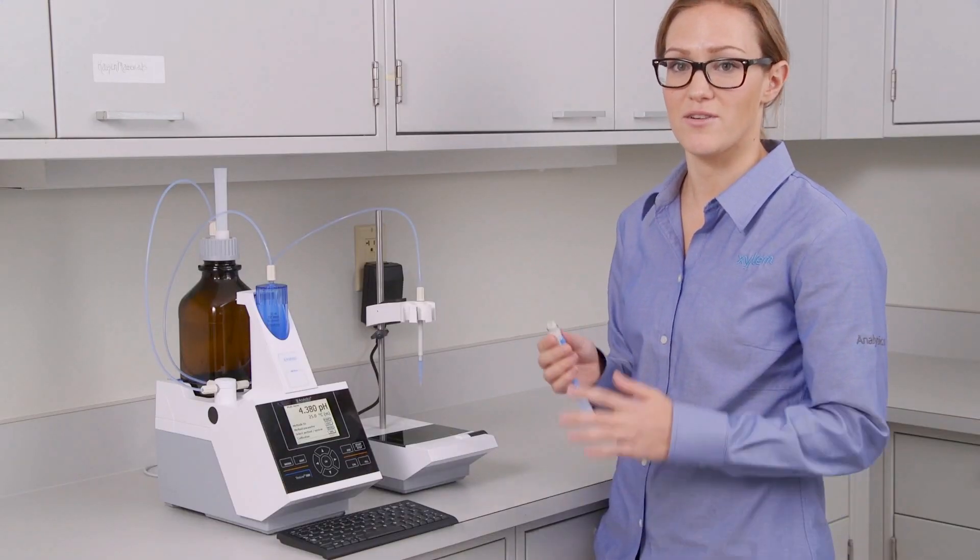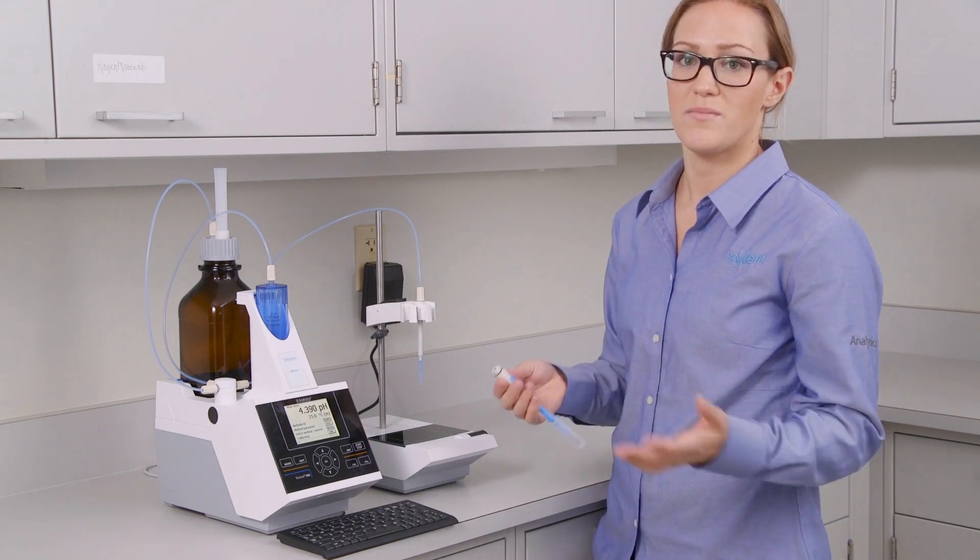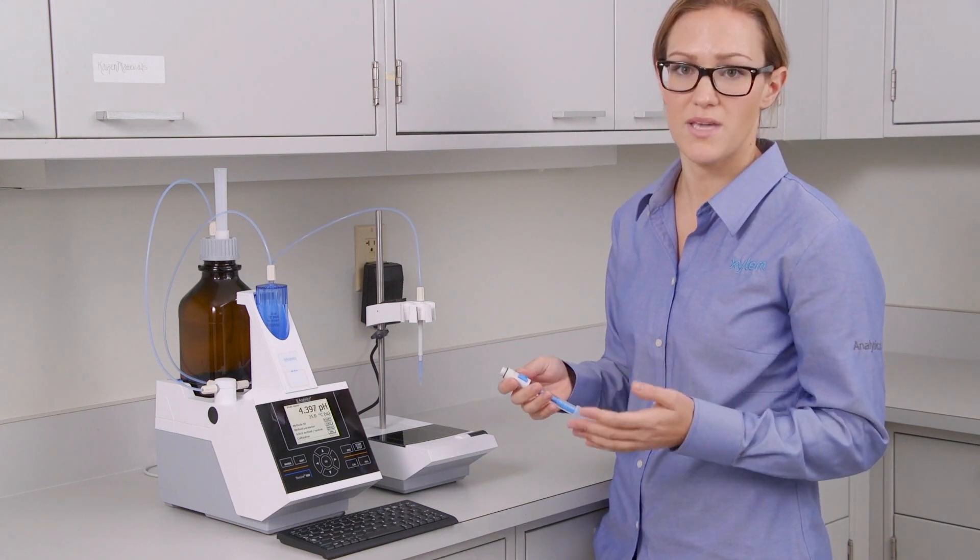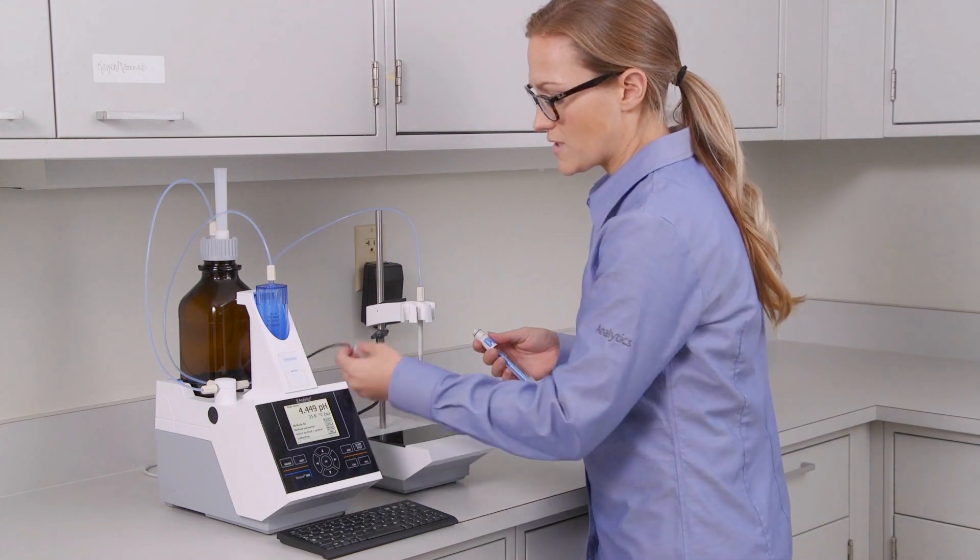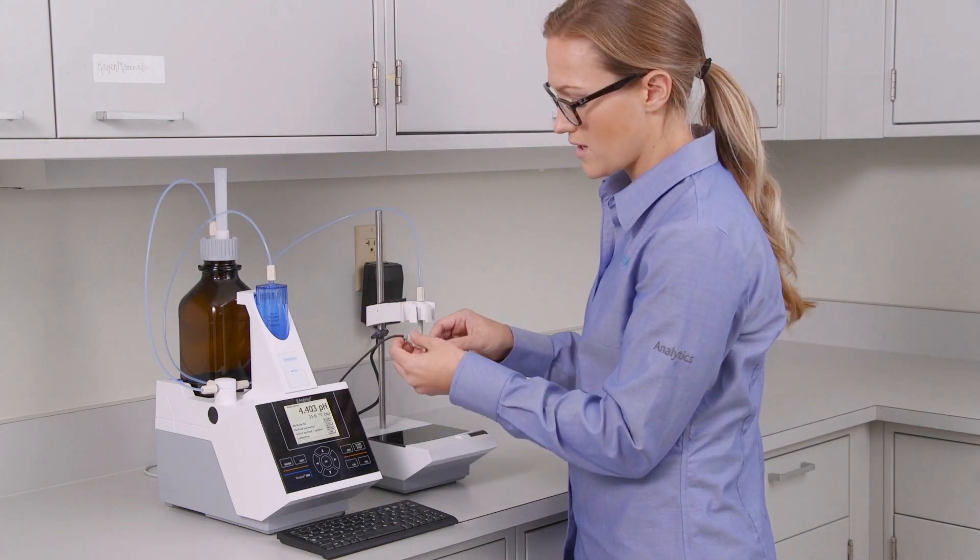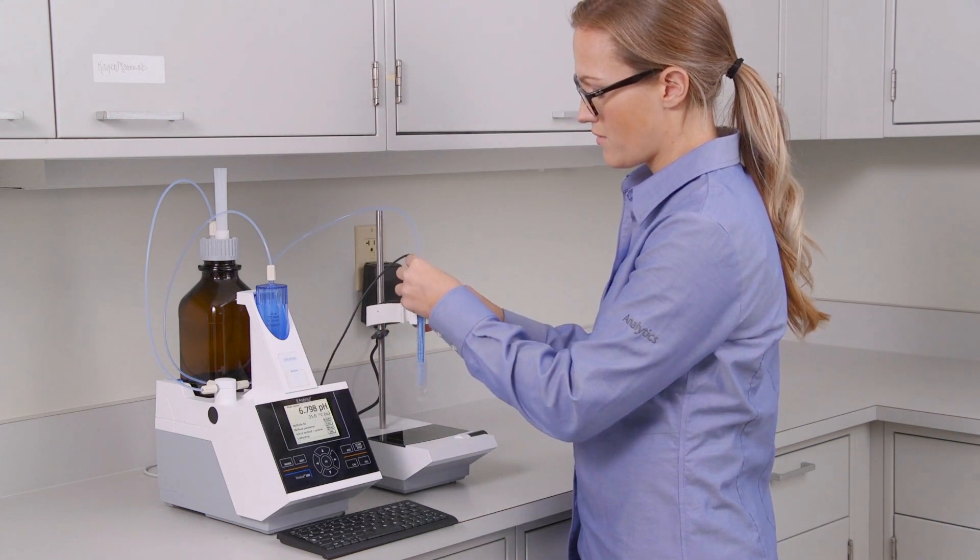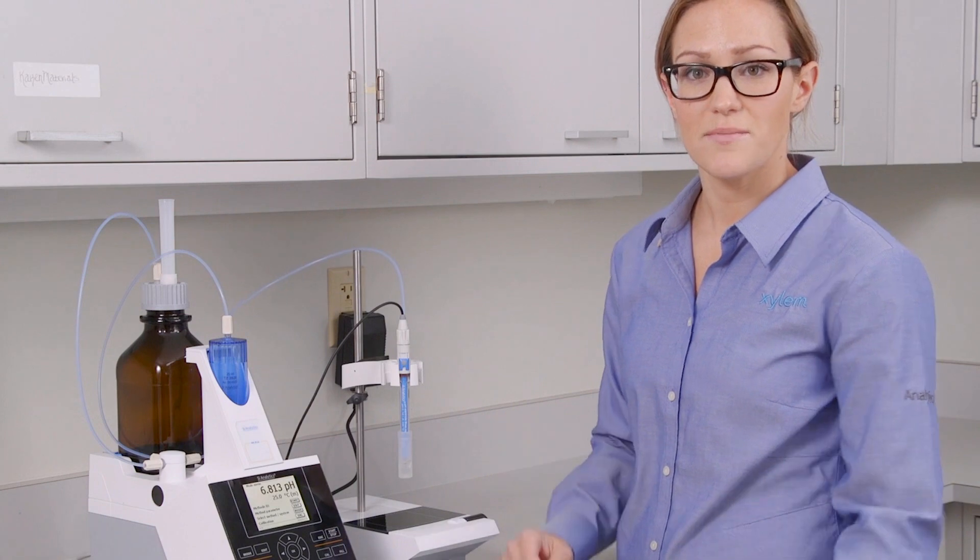The final step to getting your complete titrator set up is your electrode. Now you may be using a number of electrodes. In this case, we're just going to be working with a simple pH combination electrode. This is our blue line 11. So you'll take the other end of your electrode cable and just connect it to the top of your probe. And you'll take your probe and put it on top of the clamp like so. And it's as simple as that.